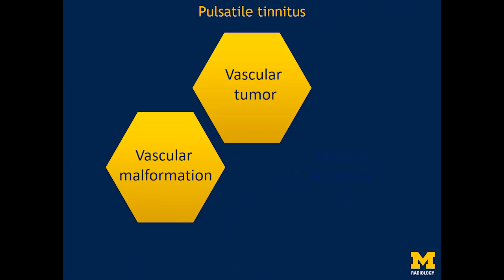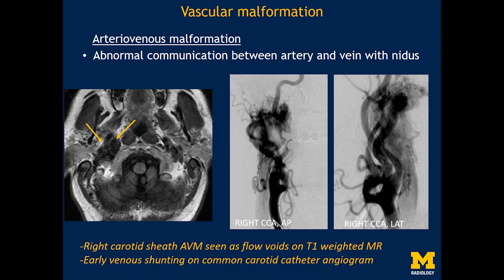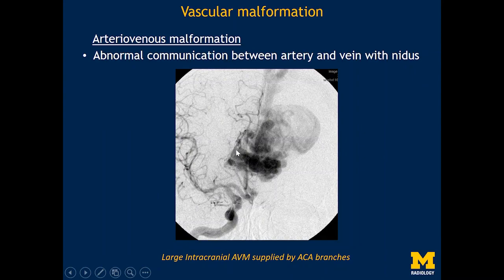We've seen a couple of examples of vascular tumors causing pulsatile tinnitus. The second category is vascular malformation, which comes in two flavors: an arteriovenous malformation or an arteriovenous fistula. In this patient, the AVM is very close to the skull base in the region of the right carotid sheath. We can see multiple flow voids on conventional T1-weighted pre-contrast MR, and on AP and lateral angiograms there is significant early venous shunting — this abnormal communication between artery and vein in the presence of a nidus causes pulsatile tinnitus. Large intracranial AVMs can also cause pulsatile tinnitus.